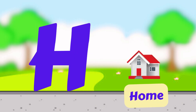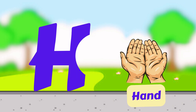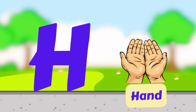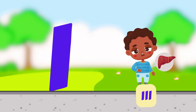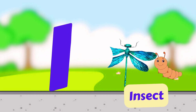H is for House. H, H, House. H is for Hand. H, H, Hand. I is for Ill. I, I, Ill. I is for Insect. I, I, Insect.